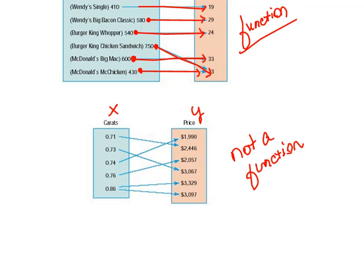Can you see where that would be? That would be right here. This x, this 0.86 carats, has two different prices. That means that you have an x value associated with two different y values. That violates the rule. So this is not a function. That's exactly what this looks like. You're not a function.